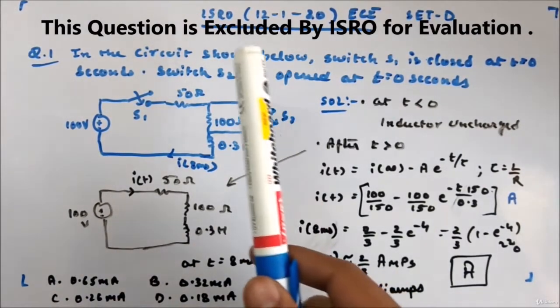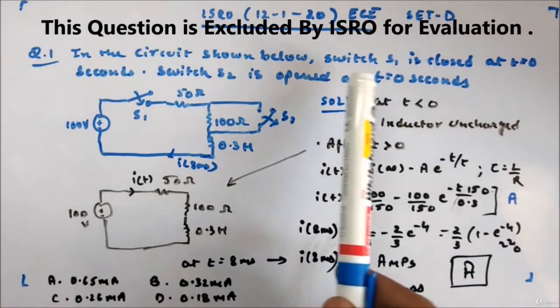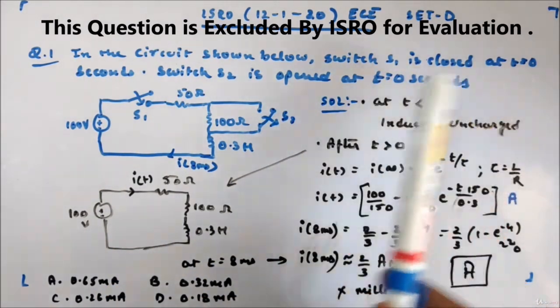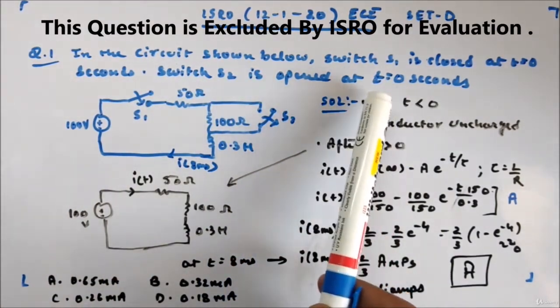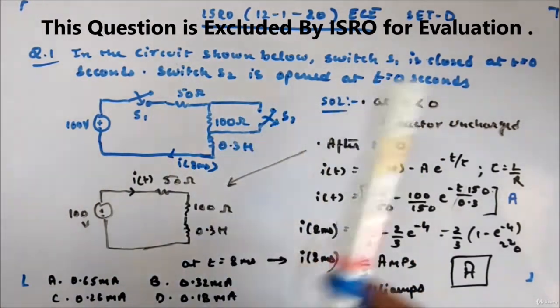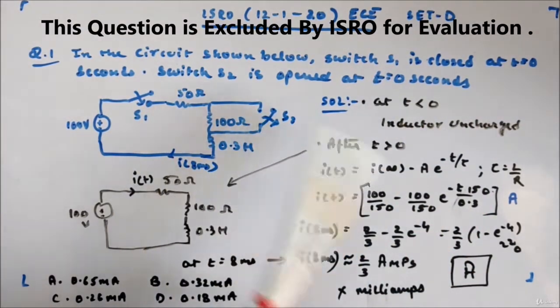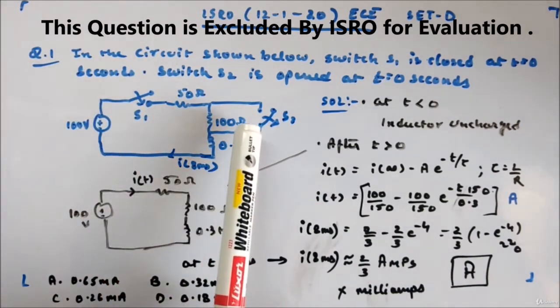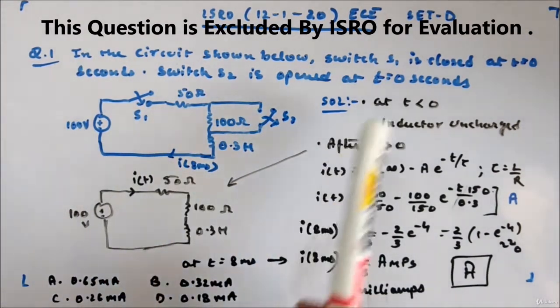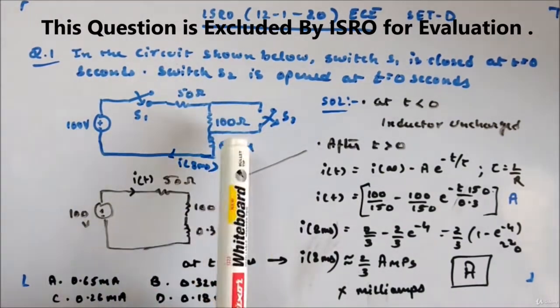The first question: in the circuit shown below, switch S1 is closed at t equal to 0 seconds, switch S2 is opened at t equal to 0 seconds. So at t=0, S1 is closed, S2 is open. Previously it was open and it was closed, so since this circuit you can see...